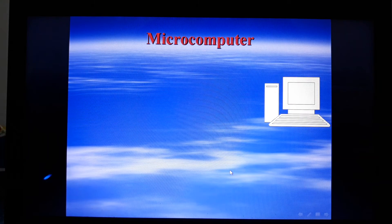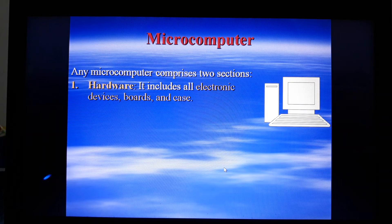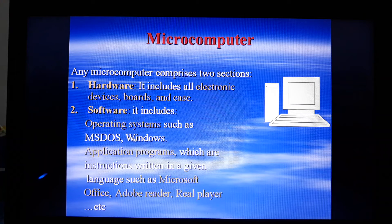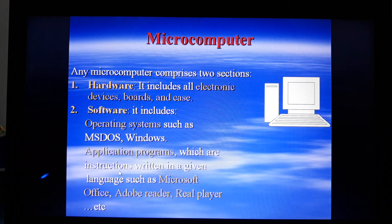Any microcomputer can be considered to consist of two sections. The first one is the hardware, which includes electronic devices, ports, and keys. And secondly, the software, which are programs that can be either operating systems to operate the machine — such as MS-DOS or Windows — or application programs which users can run on a computer, such as Microsoft Office, Adobe Reader, and many others.